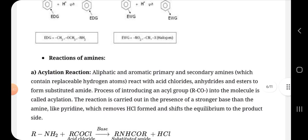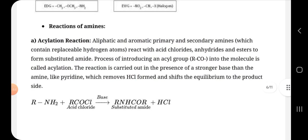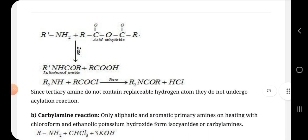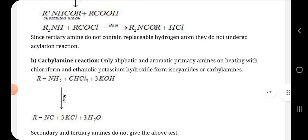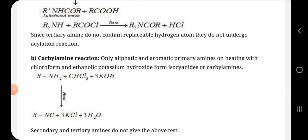Acylation reaction: aliphatic and aromatic primary and secondary amines react with acid chlorides, anhydrides, and esters to form substituted amines. This process of introducing an acyl group into the molecule is called acylation. This is the reaction. Since tertiary amines do not contain replaceable hydrogen atoms, they do not undergo this acylation reaction.